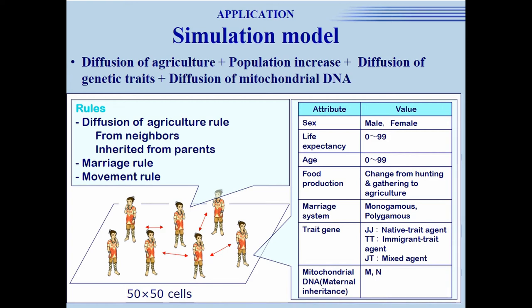This slide shows an outline of the ABM model. This model considers the fusion of genetic traits under an increasing population and the diffusion of agriculture and mitochondrial DNA. Agents were created in a two-dimensional abstract space to represent individuals in the Yayoi period. This table shows the variable parameters for agents, such as sex, life expectancy, food production methods, and so on. Traits were inherited from both parents when a new agent was created. Mitochondrial DNA was inherited only from the mother.